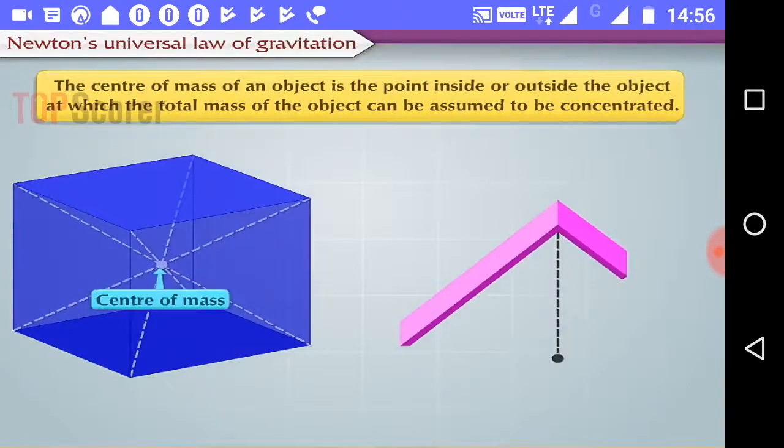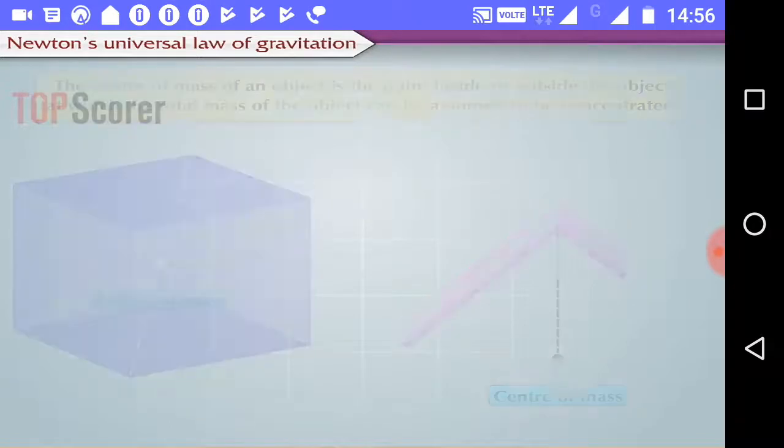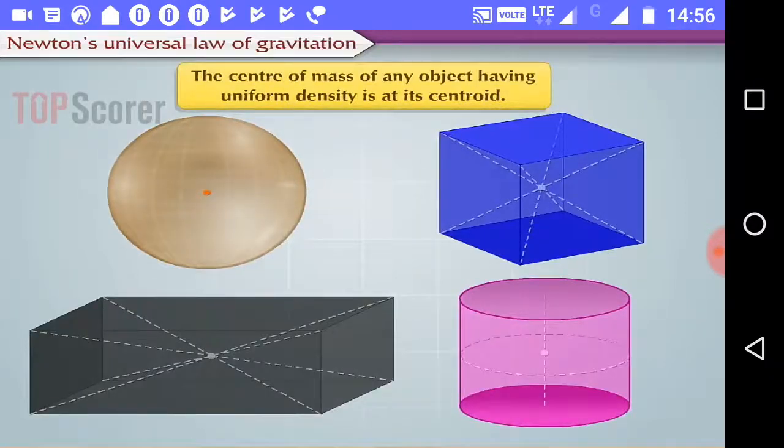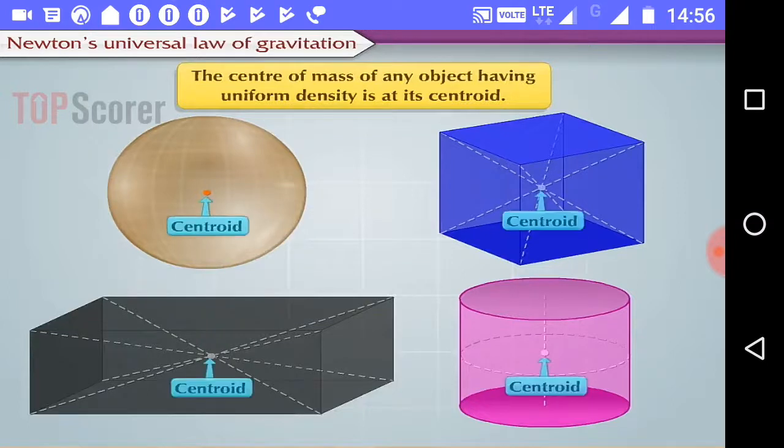The center of mass of an object is the point inside or outside the object at which the total mass of the object can be assumed to be concentrated. The center of mass of a spherical object having uniform density is at its geometrical center. The center of mass of any object having uniform density is at its centroid.